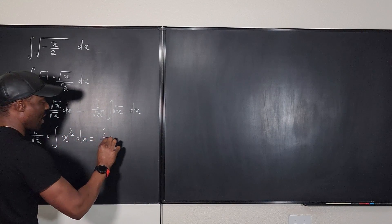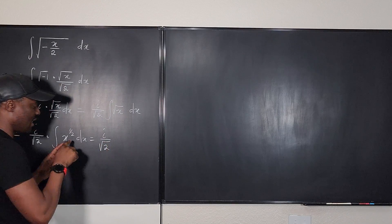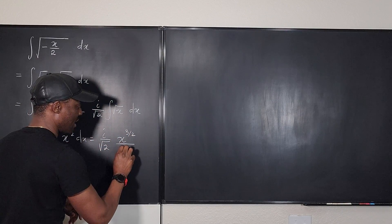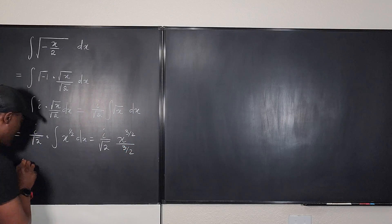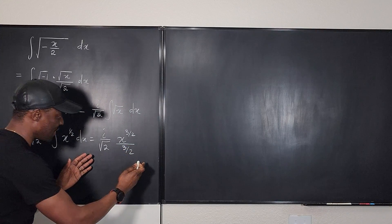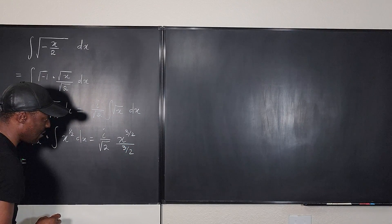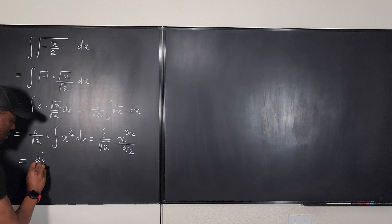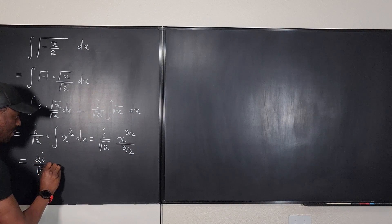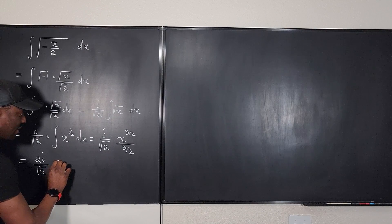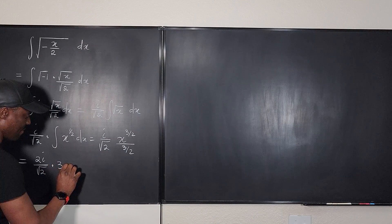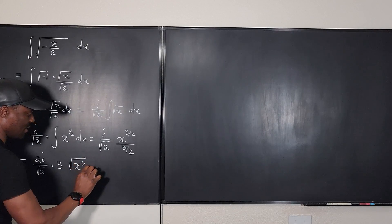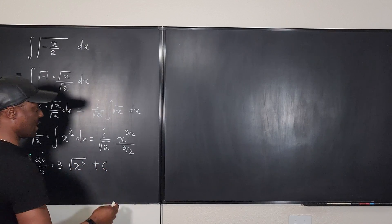This will be equal to i over the square root of two, and the integral of x to the one-half is x to the three-over-two divided by three-over-two. So we're going to get 2i over the square root of two multiplied by three, times the square root of x cubed, plus c.